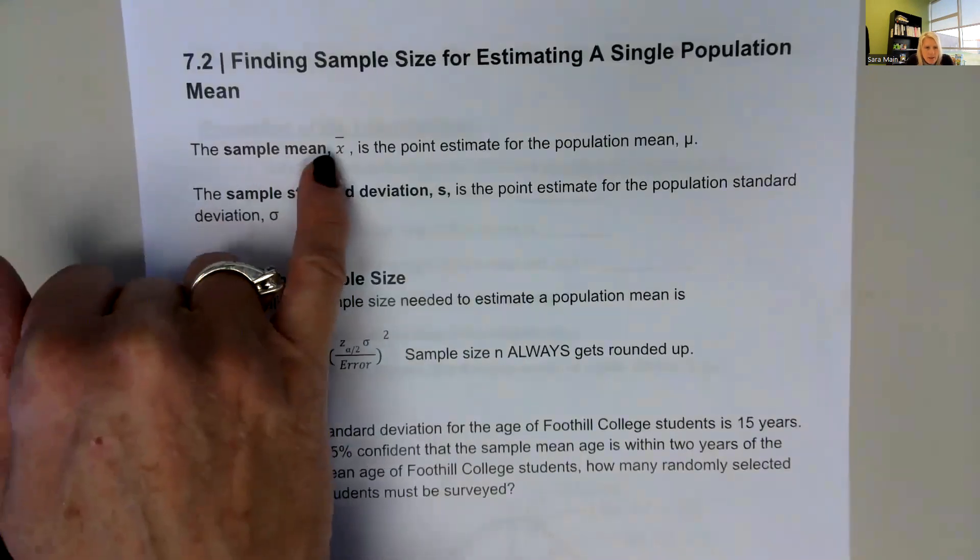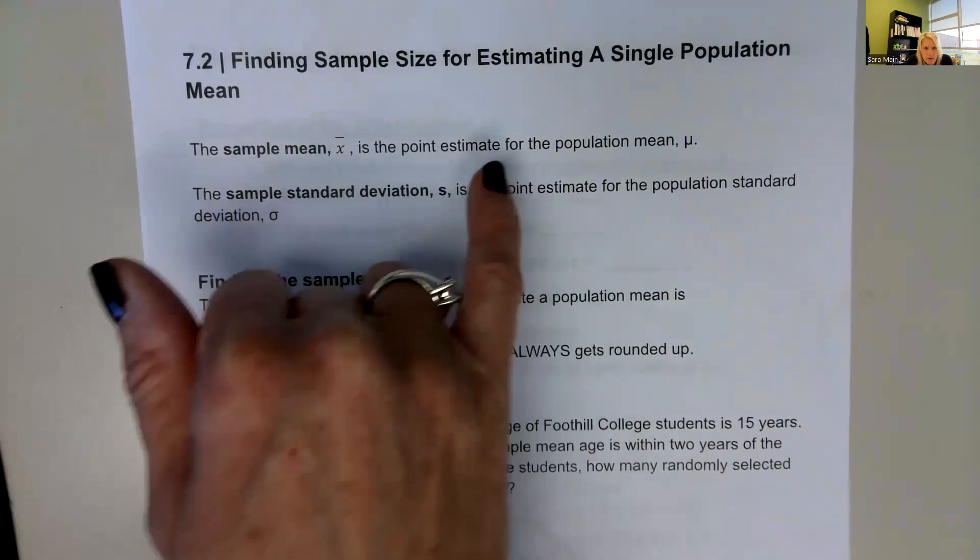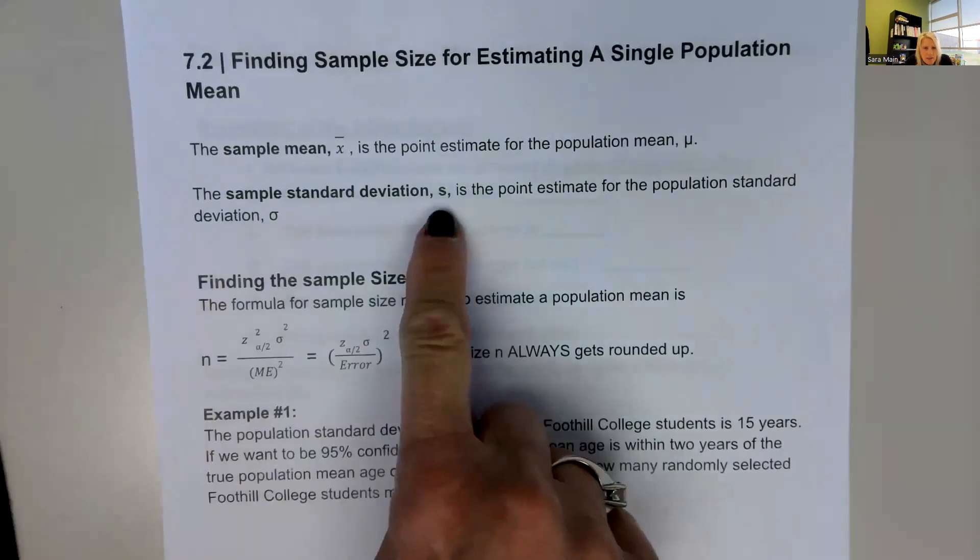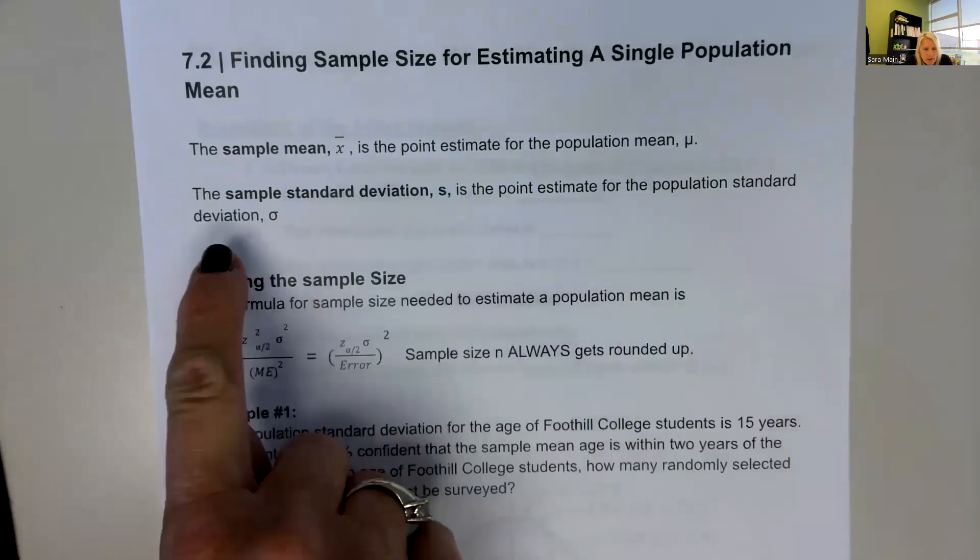We need to refresh on the sample mean, x̄, which is the point estimate for the population mean μ. And the sample standard deviation s is the point estimate for the population standard deviation σ.